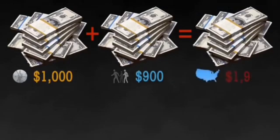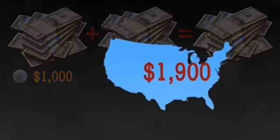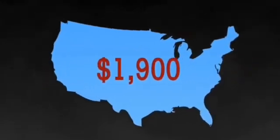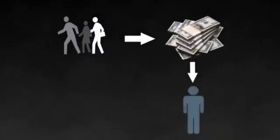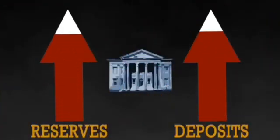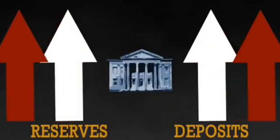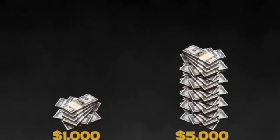A total of $1,900 of new money is now available in the economy. The person that took the $900 loan spends that money. The payee then deposits the $900 into their bank account, and once again reserves and deposits increase. This process goes on and on until that original $1,000 bond, which was created from nothing, becomes $10,000.